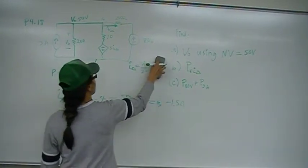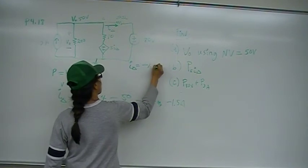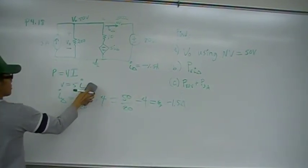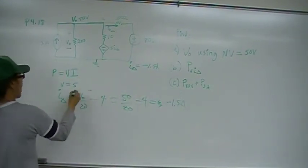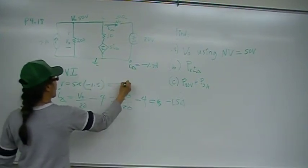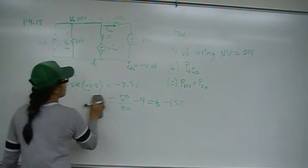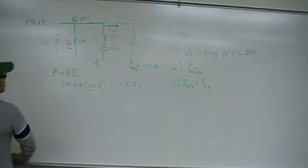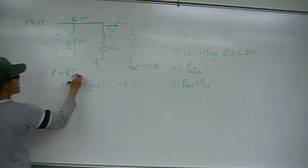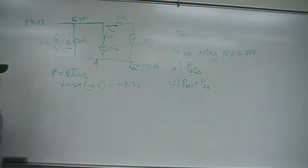So now we know what I delta is, negative 1.5 amps. We know what V out is. V is going to be 5 times negative 1.5, which is going to be negative 7.5 volts. Okay, now that was just one piece of the puzzle. We need to find the I, the current that is going across the dependent voltage source.